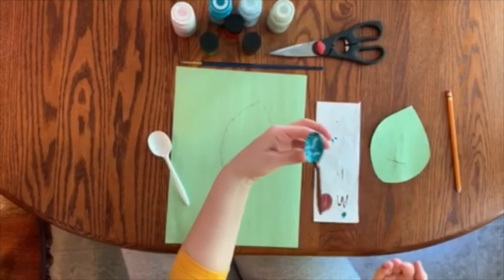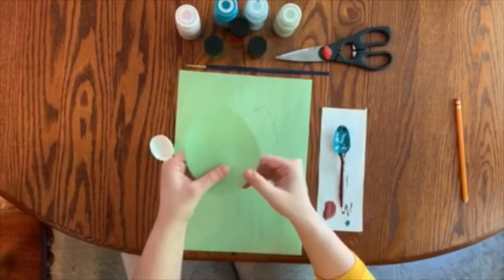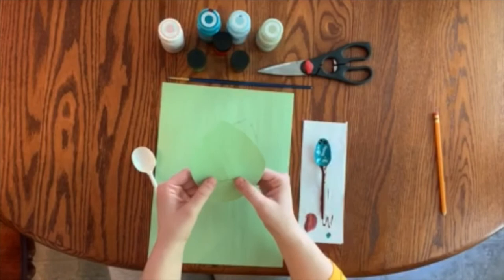So when you cut out your leaf, you're going to make a one-inch incision. If it needs to be bigger, make it bigger. If it needs to be smaller, you can make it smaller.